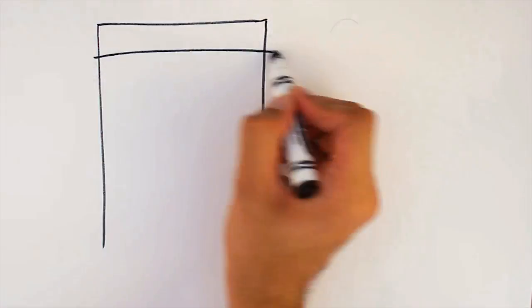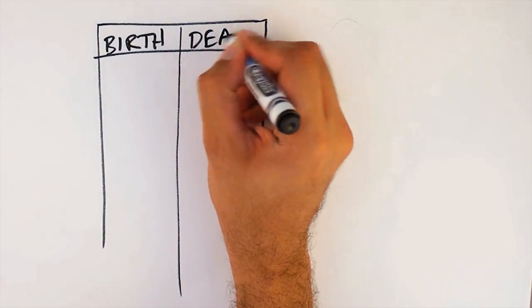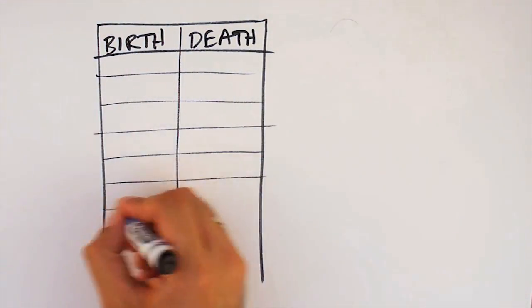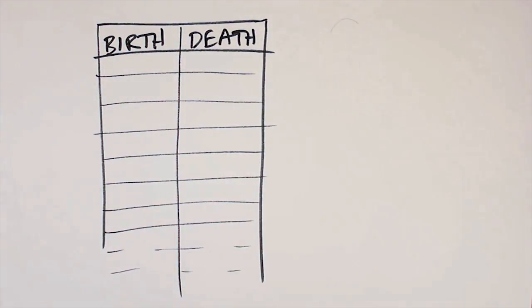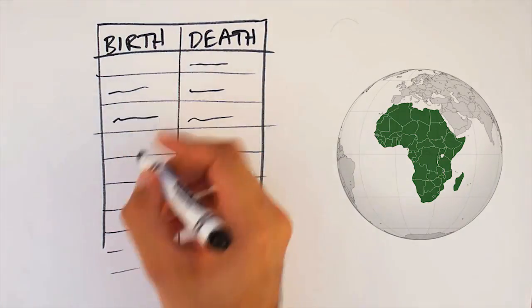We try to get data on population counts, births, deaths and migration every few years from censuses and other national sources. In reality, all these sources have errors and missing data. This is a real problem in Africa right now, where only a few countries have complete official records on births and deaths.